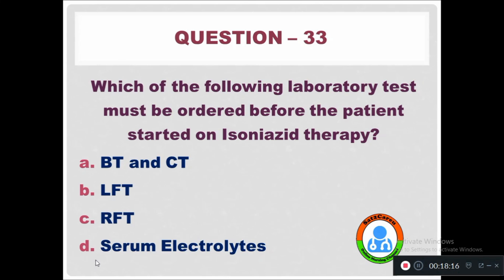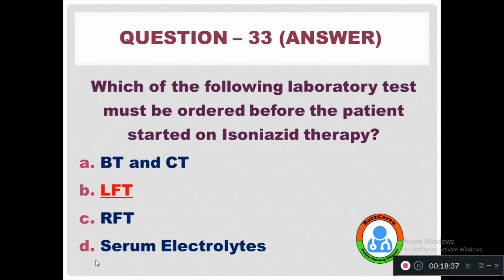Question 33: Which of the following laboratory tests must be ordered before the patient starts isoniazid therapy? Option A: Bleeding time and clotting time. Option B: Liver function test. Option C: Renal function test. Option D: Serum electrolyte. Before starting isoniazid therapy, a liver function test should be done.